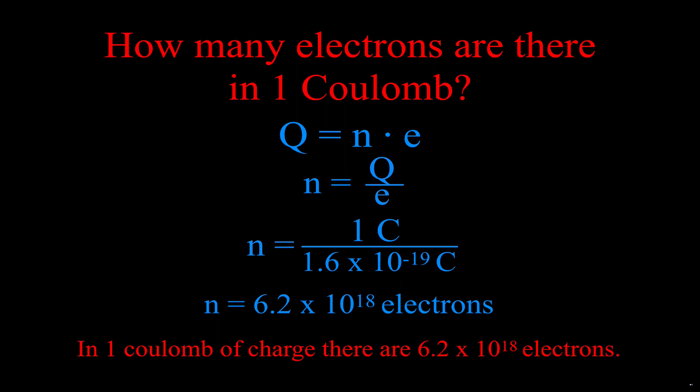We could say in one coulomb of charge there are 6.2 times 10 to the 18 electrons. That means that if the current is one ampere, that's 6.2 times 10 to the 18 electrons are passing a point in that circuit every second if the current is one ampere, because then it's one coulomb per second.